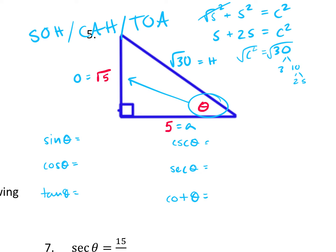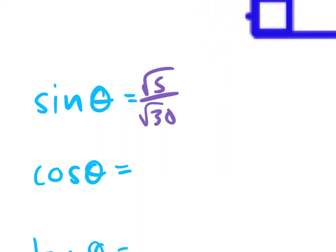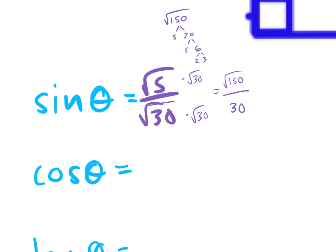Sine would be opposite over hypotenuse, so that would be √5 over √30. I can't leave a square root in the denominator, so I need to rationalize. I multiply by √30 on the top and bottom. The bottom turns into 30. √5 times √30 is √150. Factors of 150: 5 and 30; 30 is 5 and 6; 6 is 2 and 3. I have a pair of 5s, so 5 comes outside: 5√6 over 30. Dividing both by 5 gives √6 over 6.